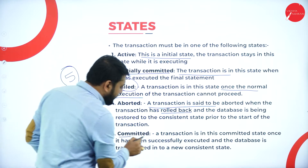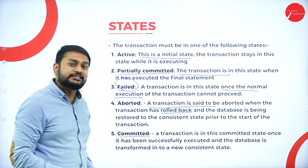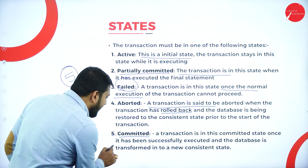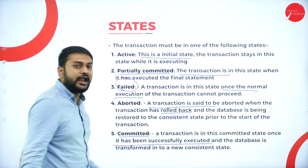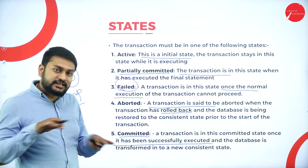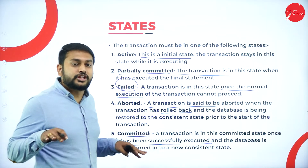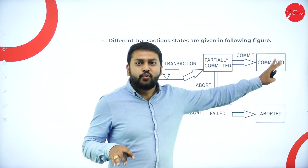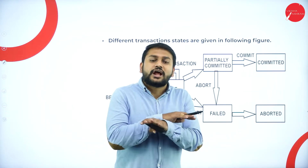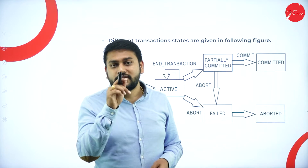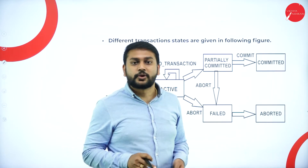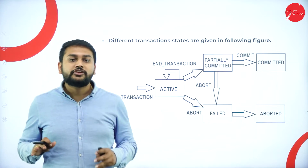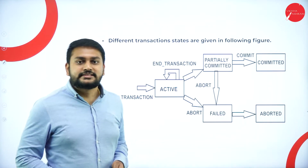The committed state is when a transaction has been successfully executed and the database state is saved. Whatever changes you have done are saved — that is what committed means. These are the five different states we come across with respect to a transaction: active, partially committed, failed, aborted, and committed.